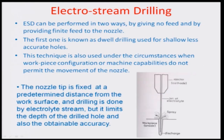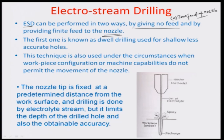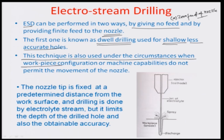The ESD process can be categorized into two different modes. The first mode is when you do not provide any feed to the nozzle which carries the acid electrolyte stream - so there is zero feed of the nozzle. This is also called dwell drilling, as the name suggests that the electrode is stationary. These are normally used for shallow, less accurate holes, sometimes confined to surface machining operations, and also used under circumstances when the workpiece configuration or machine capabilities do not permit movement of the nozzles.